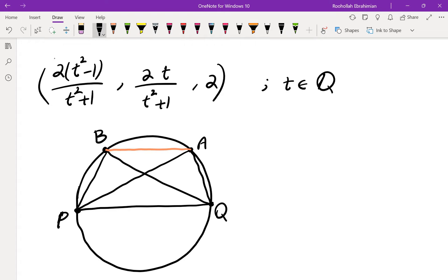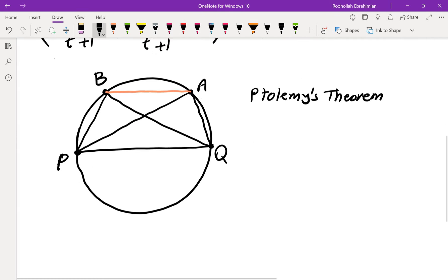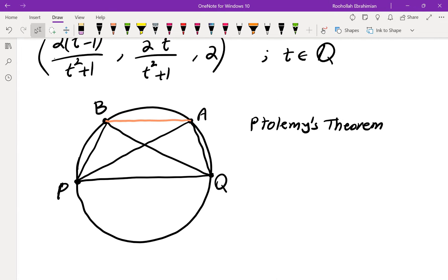So there is this theorem that you might be familiar with called Ptolemy's theorem, which is what I'm going to use in order to in fact show that the last side must be rational. If you look at Ptolemy's theorem, it tells you if you have a quadrilateral that is cyclic, sum of product of opposite sides is equal to product of diagonals.